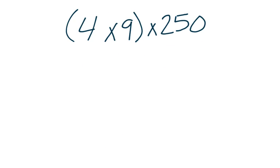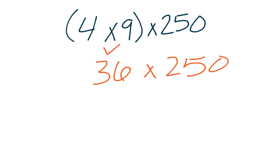Let's take a look at another one. In this problem we have 4 times 9 times 250. If we were to start with multiplying 4 times 9 together, that would give us 36 times 250, which is a really big problem. So I want to find a way to make this easier. We know that 4 and 25 are friendly numbers — peanut butter and jelly numbers. Here we see a 4 and also a 250, so we want to multiply those two numbers together first. We're going to use both the commutative and associative properties, moving numbers and parentheses around.